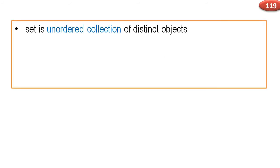Now, set. A set is an unordered collection of distinct objects. Unlike a list, which is an ordered collection, a set does not support indexing — there is no first element at index 0.